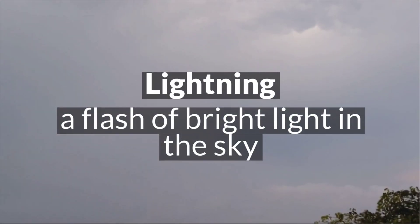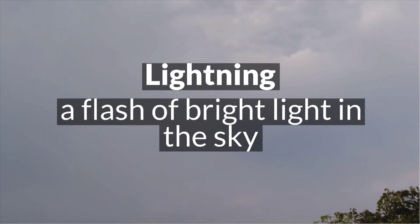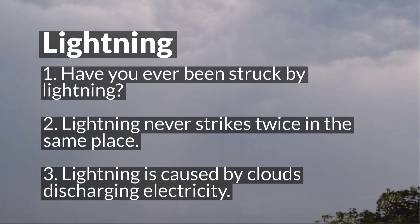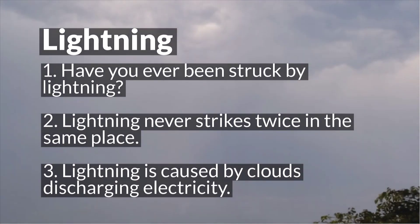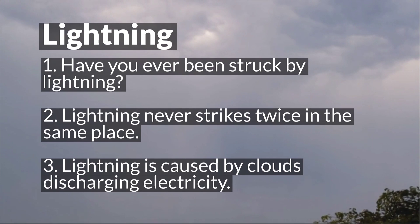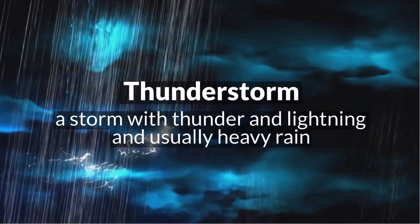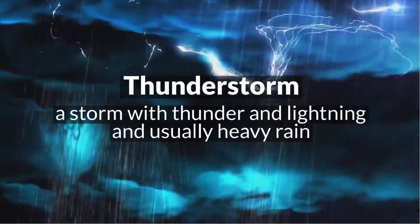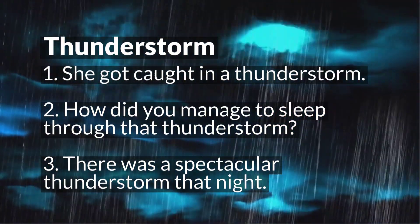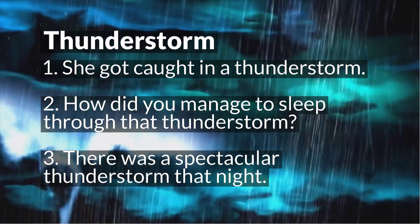Lightning is a flash of bright light in the sky that occurs during a thunderstorm. 'Have you ever been struck by lightning?' 'Lightning never strikes twice in the same place.' 'Lightning is caused by clouds discharging electricity.' Thunderstorm — a storm with thunder and lightning and usually heavy rain. 'She got caught in a thunderstorm.' 'How did you manage to sleep through that thunderstorm?' 'There was a spectacular thunderstorm that night.'